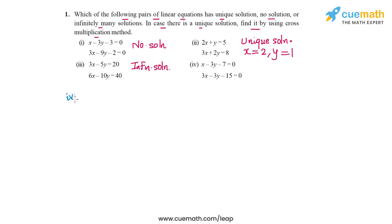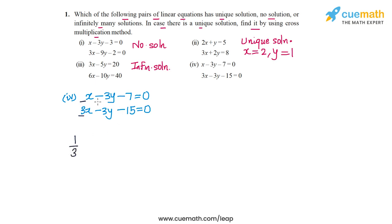In part 4, the pair of equations is x minus 3y minus 7 equals 0, and 3x minus 3y minus 15 equals 0. The coefficients of x are 1 and 3, so a1/a2 is 1 by 3. The coefficients of y are minus 3 and minus 3, so b1/b2 is minus 3 by minus 3, which equals 1. Since 1 by 3 is not equal to 1, a1/a2 is not equal to b1/b2, meaning the two lines intersect at a unique point and this pair has a unique solution.